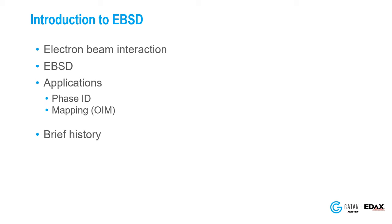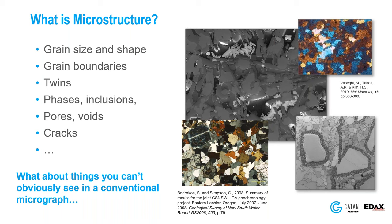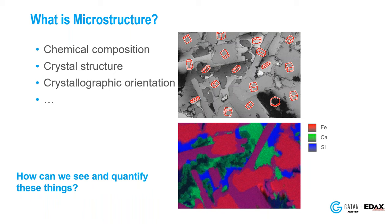I want to start with the idea of what is microstructure. When we think of microstructure, we think of things like grain size and shape, grain boundaries, twins, phases, inclusions, pores, voids — all kinds of things. But there are things you can't see in a conventional micrograph, including chemical composition, crystal structure, and the crystallographic orientation of those crystals. That's what we're going to focus on today: how do we find, show, and display that information.